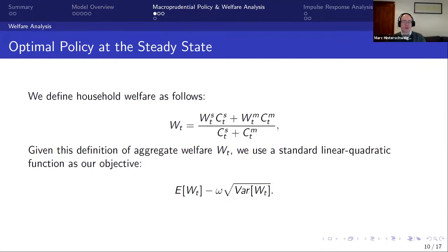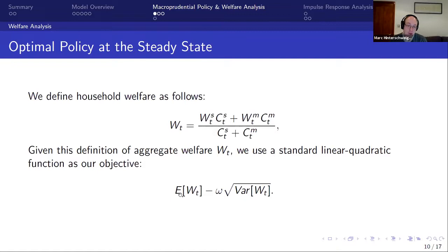To find optimal macroprudential policy, we define household welfare as a weighted average of impatient and patient household welfare weighted by their respective consumption shares. The optimization objective is to maximize expected welfare while minimizing volatility — parameterized by omega — reflecting the policy maker's preference for welfare smoothing.